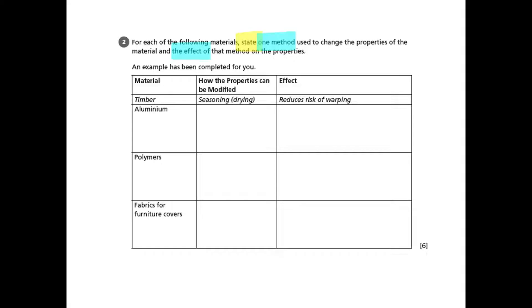And what we need to do is to state one method to change the property of the material and the effects of that method on the properties.